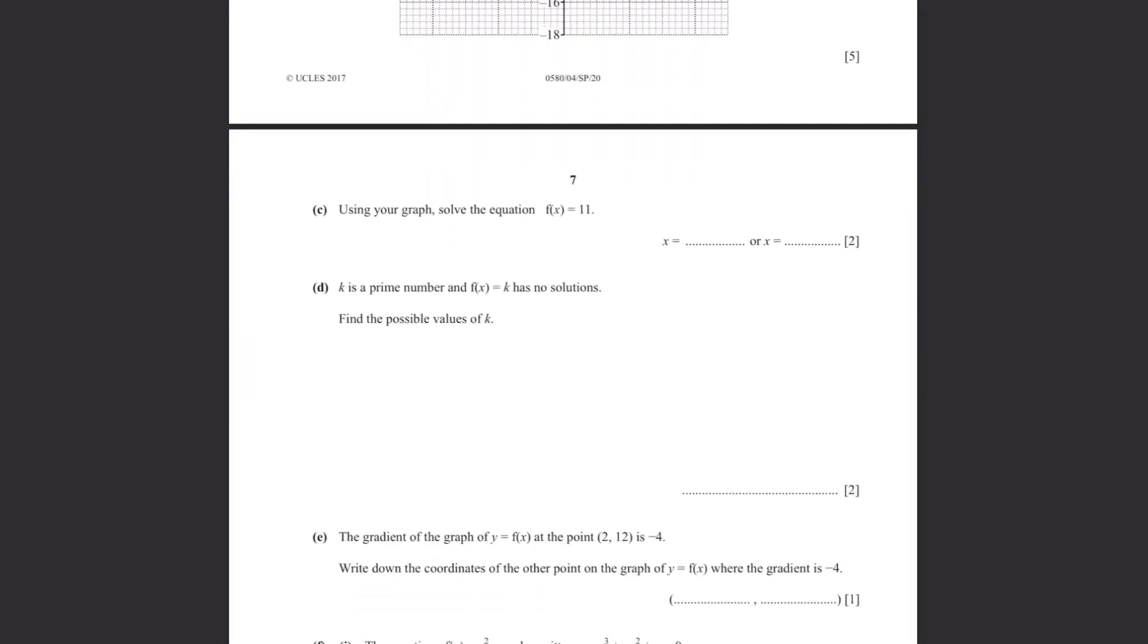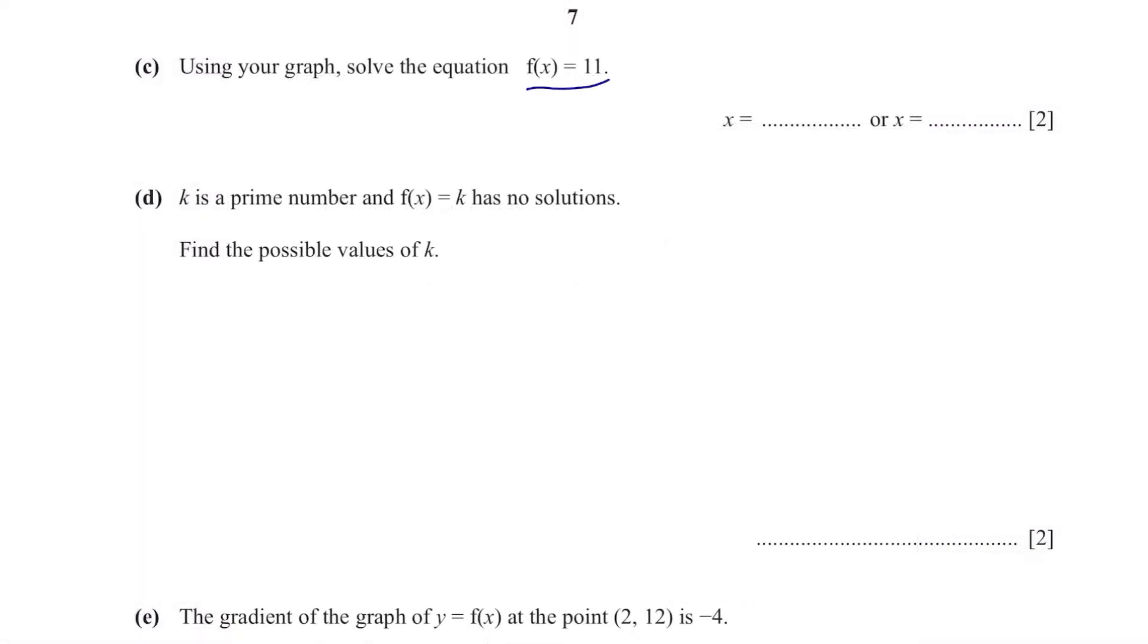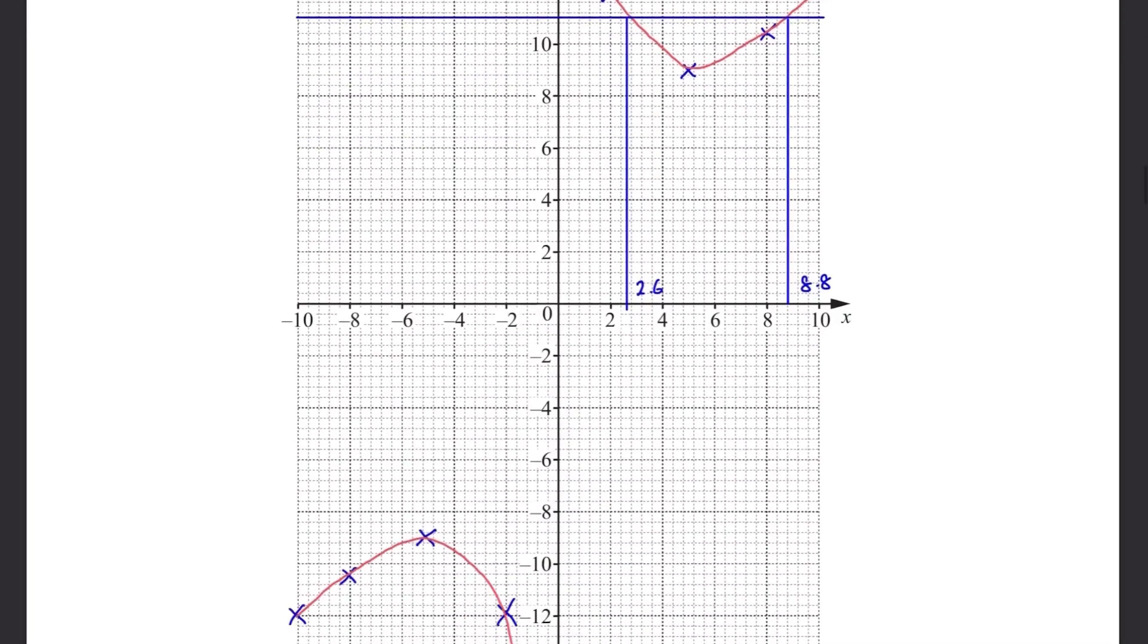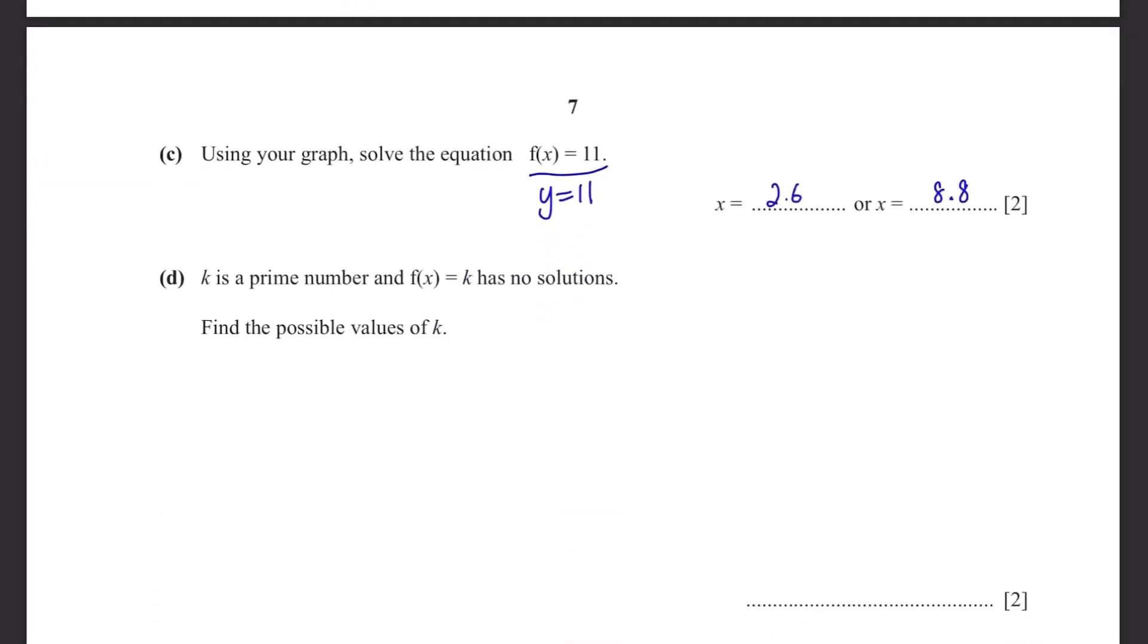Part C. Using your graph, solve the equation f(x) equals to 11. f(x) is y so when y equals to 11, this means you need to draw a horizontal line at y is 11 and see where the straight line intersects the curve. Okay, we have our answer here. Just find where it crosses. This is the reason why your graph needs to be accurate.